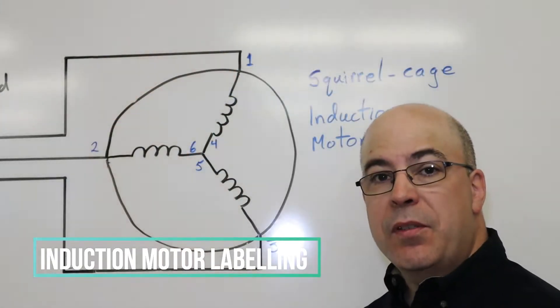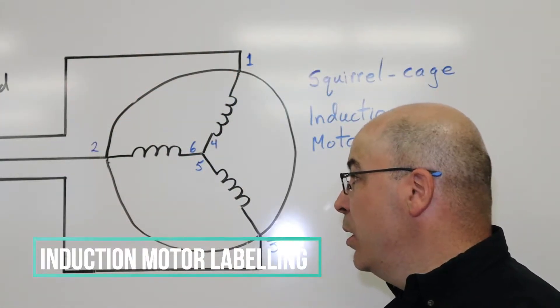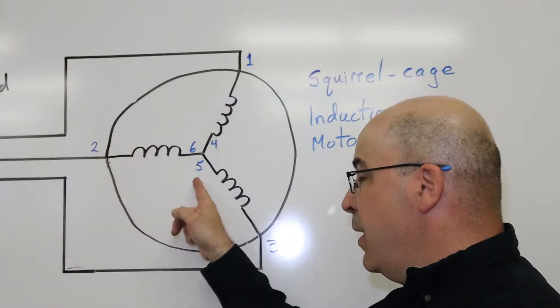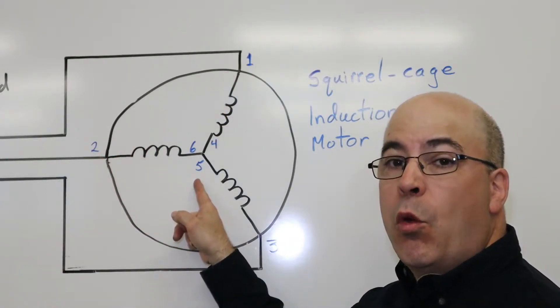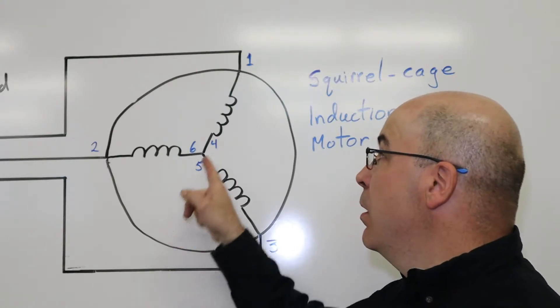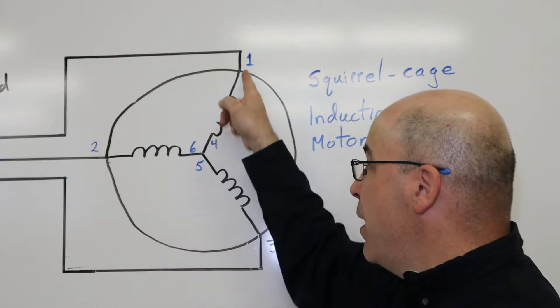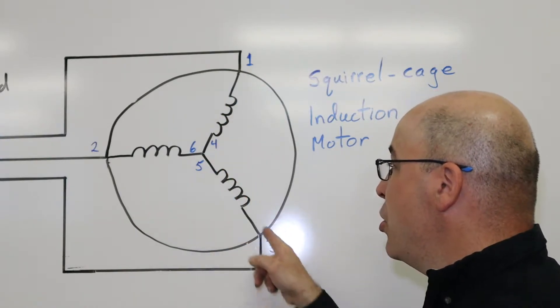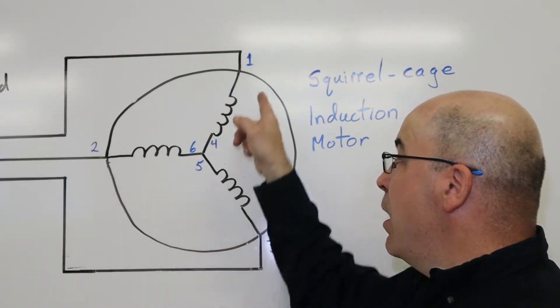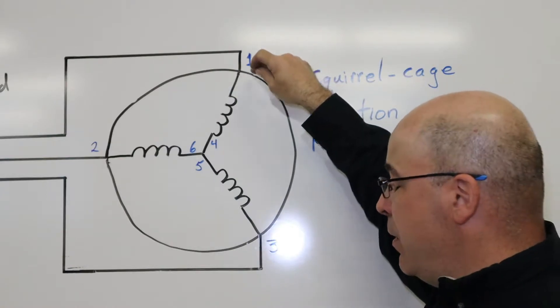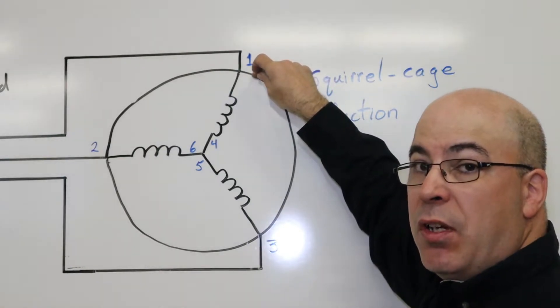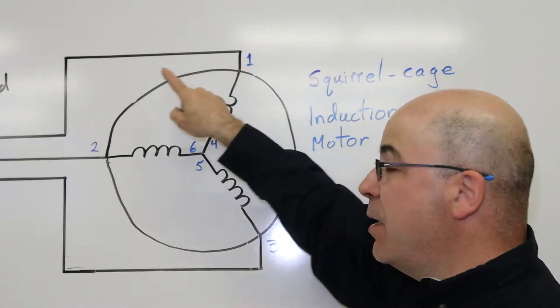Now when it comes to the squirrel cage induction motor, you'll notice that this is wired in what we call the Y configuration. Each one of these represents a set of windings - I have one set of windings, two, and three.